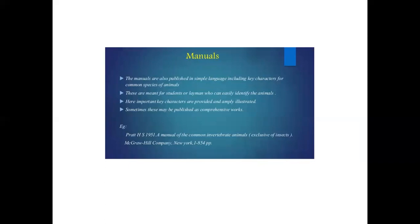Manuals: Manuals are also published in simple language, including key characters for common species of plants and animals. These are meant for students or laymen who can easily identify the animals. Important key characters are provided and amply illustrated. Sometimes these may be published as comprehensive works.